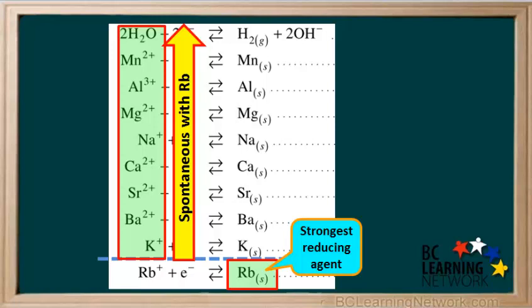It's really important for you to distinguish between an ion of an element and its neutral or atomic form. For example, Rb solid is the strongest reducing agent and is very reactive, whereas Rb+ is a very weak oxidizing agent and doesn't react with anything on this table.